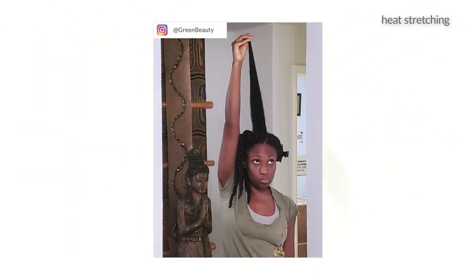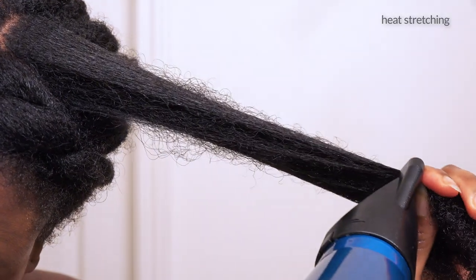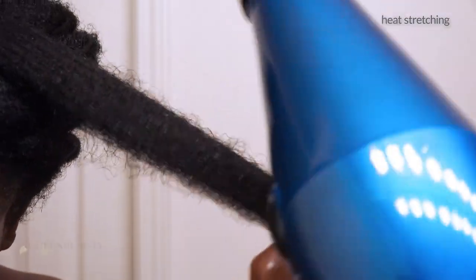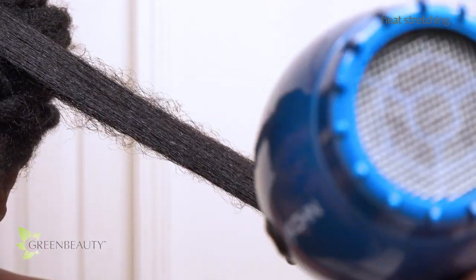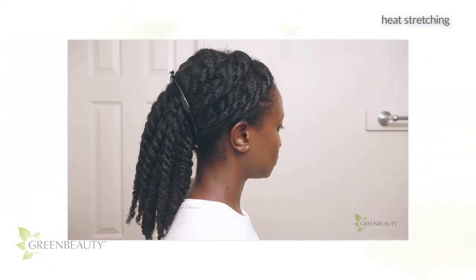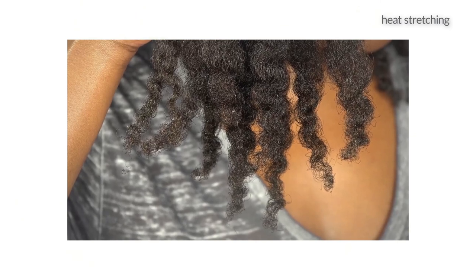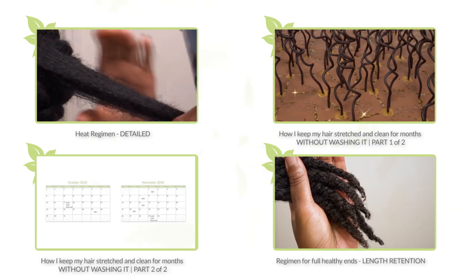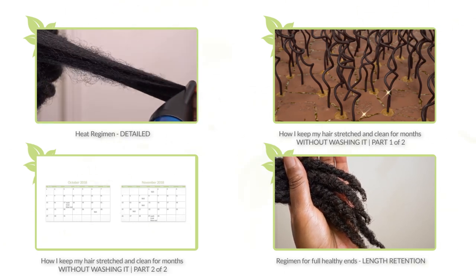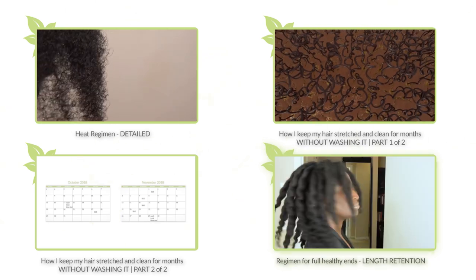By now we all know that all natural tightly textured hair benefits one way or another from stretching. The difference with low porosity hair is that due to the tight cuticle layers, it may prefer heat stretching over heatless stretching. If done correctly, heat stretching can be a game changer to your regimen. With your hair properly stretched, you can see and care for your ends better, and with the tight cuticle scales stretched, they can soak in moisture more easily. Below is a link to a heat series I posted — I go over details on how I heat stretch my hair and how I keep my stretch for weeks. There's also a link to a video on my regimen for my ends.